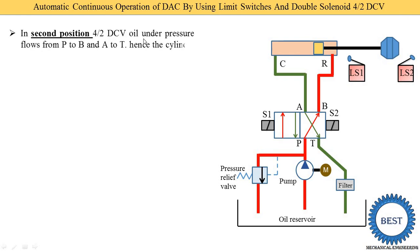In the second position of the 4 by 2 DCV, oil under pressure flows from P to B and A to T, hence the cylinder retracts. Pressurized oil is supplied from P to B, goes to the rod side port R, applies force on the piston, and the piston moves from right to left — this is retraction. Oil on the left side of the piston is supplied to port C, then to port A, which is connected to port T, and the oil returns to the reservoir through the filter.